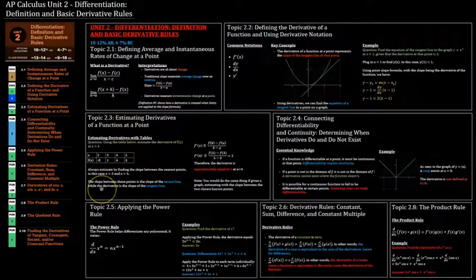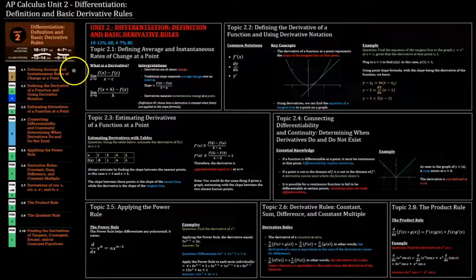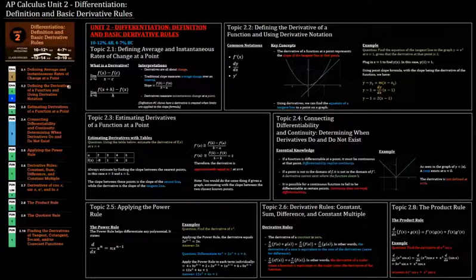Jonathan and we're moving on to unit 2 of AP Calculus AB and BC. This unit makes up 10 to 12% of Calculus AB and 4 to 7% of BC and it's a key unit that lays the foundation for the rest of both courses.